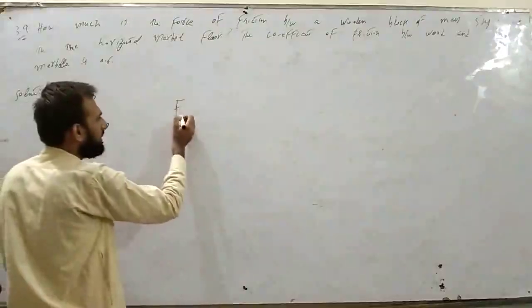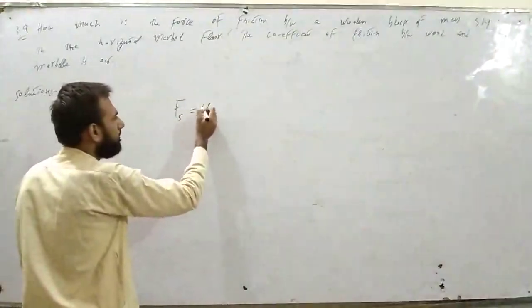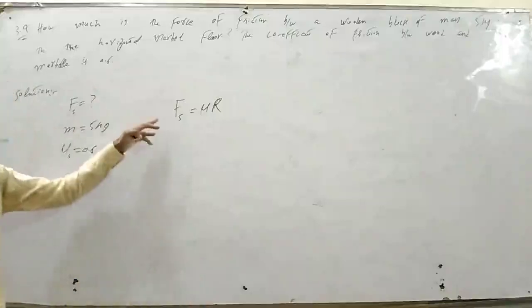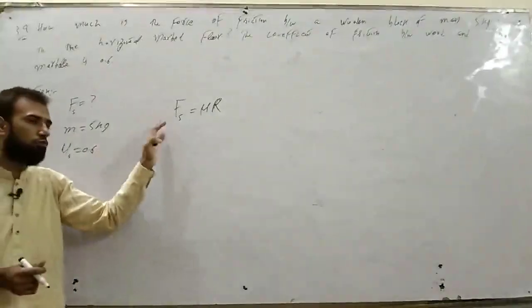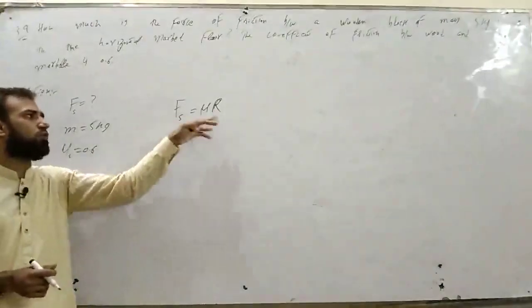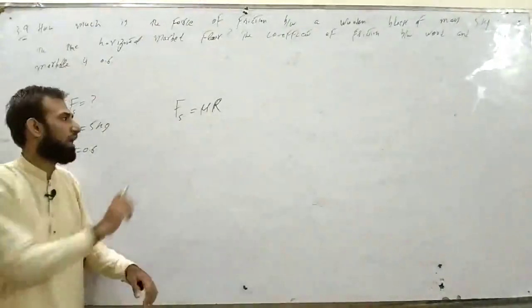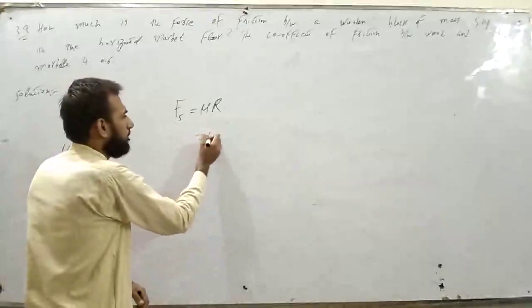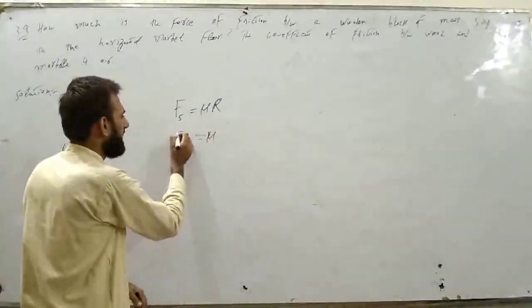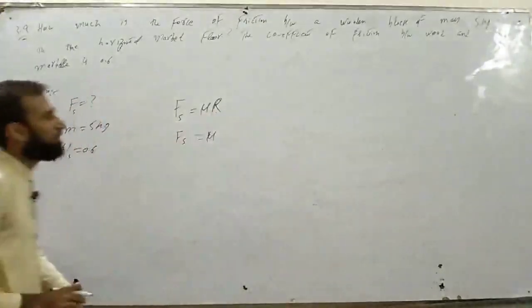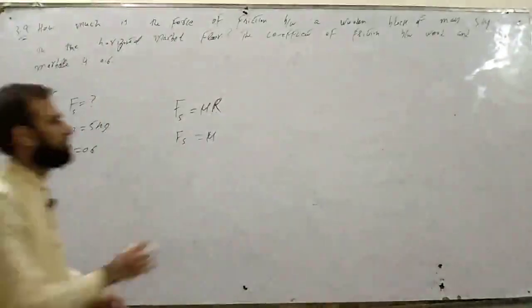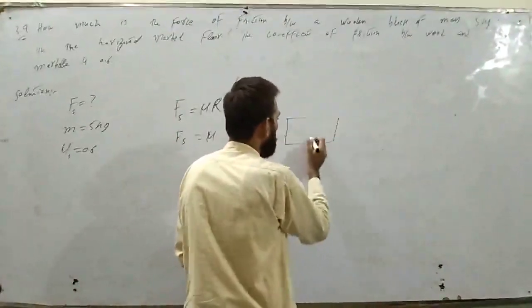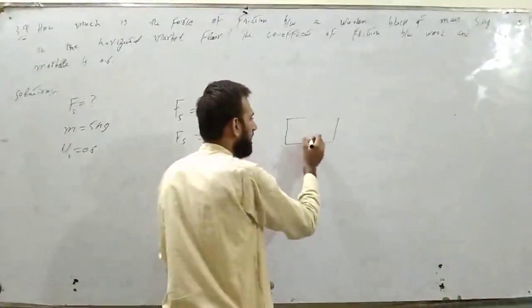As we know that Fs is equal to mu R। यह friction का formula proof किया था हमने। Fs is equal to mu R। R होता है normal reaction। एक body है - box है। इसका weight downward होता है, normal reaction upward होती है। यह R है, यह W है।